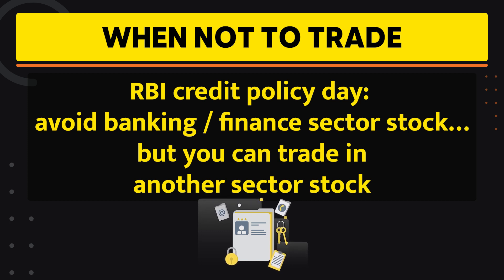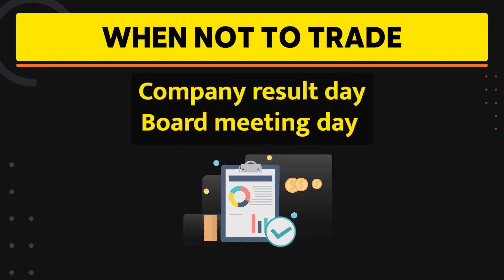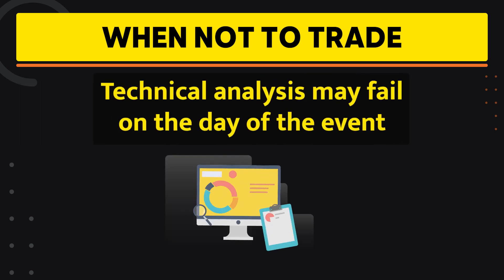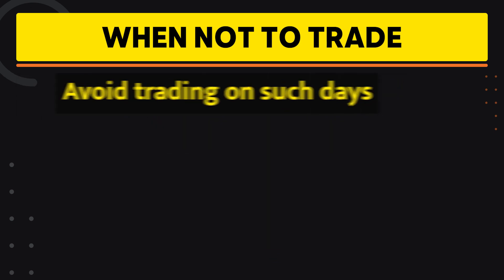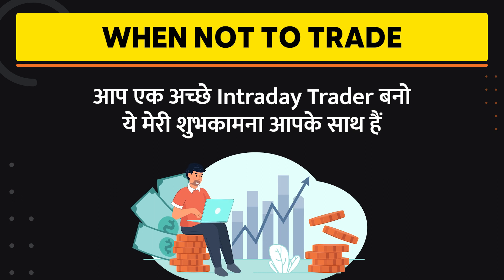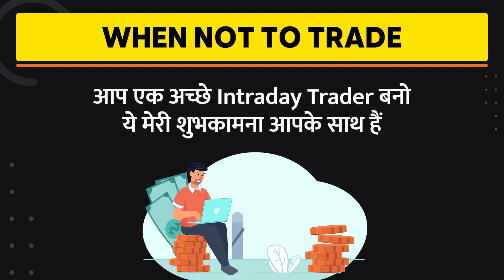During RBI or financial sector events, you have to avoid trading in that related sector stock. For company results, board meetings, or director decisions, the stock can go up or down sharply, so technical analysis may not follow. In some days and in some places, you have to avoid trading and keep your attention to these important things.